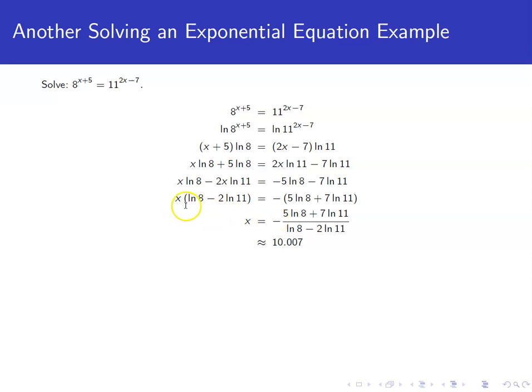So now to solve for x, we'll divide by the natural log of 8 minus 2 natural log of 11 to get x is equal to negative 5 natural log of 8 plus 7 natural log of 11 all over natural log of 8 minus 2 natural log of 11. And if you put that in your calculator, you should get approximately 10.007.